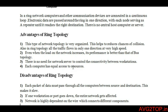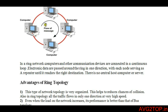Some advantages of ring topology: it reduces collision because data is transferred from source to destination in one direction within the network. It also achieves high speed — even when the network load increases, the performance is better than bus topology because it is faster.